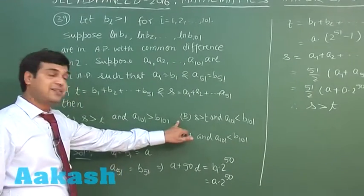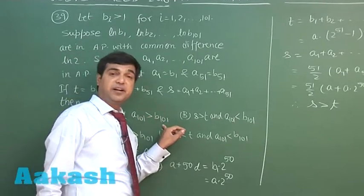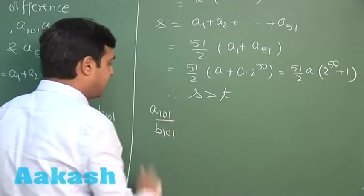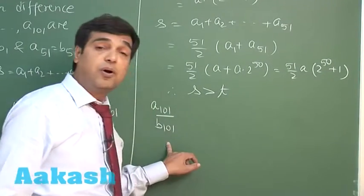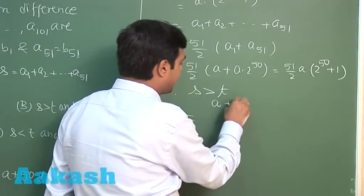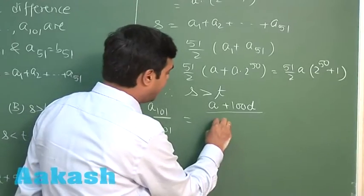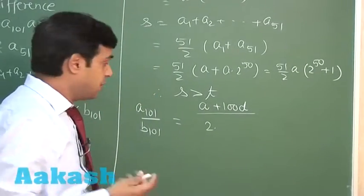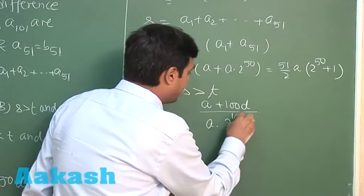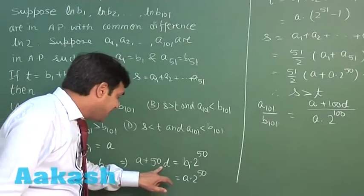From the four options, either A or B is correct; C and D are clearly not possible. We also need to compare a101 and b101. Since all b's are positive, let us find the ratio a101 / b101. Here a101 = a + 100d and b101 = a × 2^100.